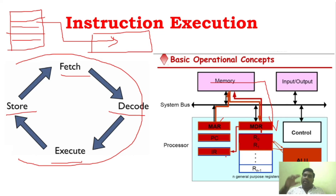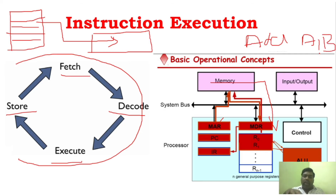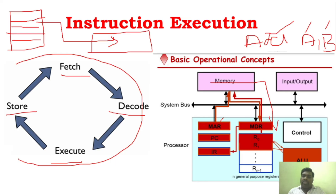Once the instruction reaches the IR, it will decode the instruction. For example, if it has an ADD instruction like ADD A, B, it will be decoded. While decoding, the processor understands that it needs to perform an ADD operation — that information is sent to the ALU. It will also need the values of A and B, so it will get that data from memory and pass it to the ALU, which will perform the operation and return the result to the processor.